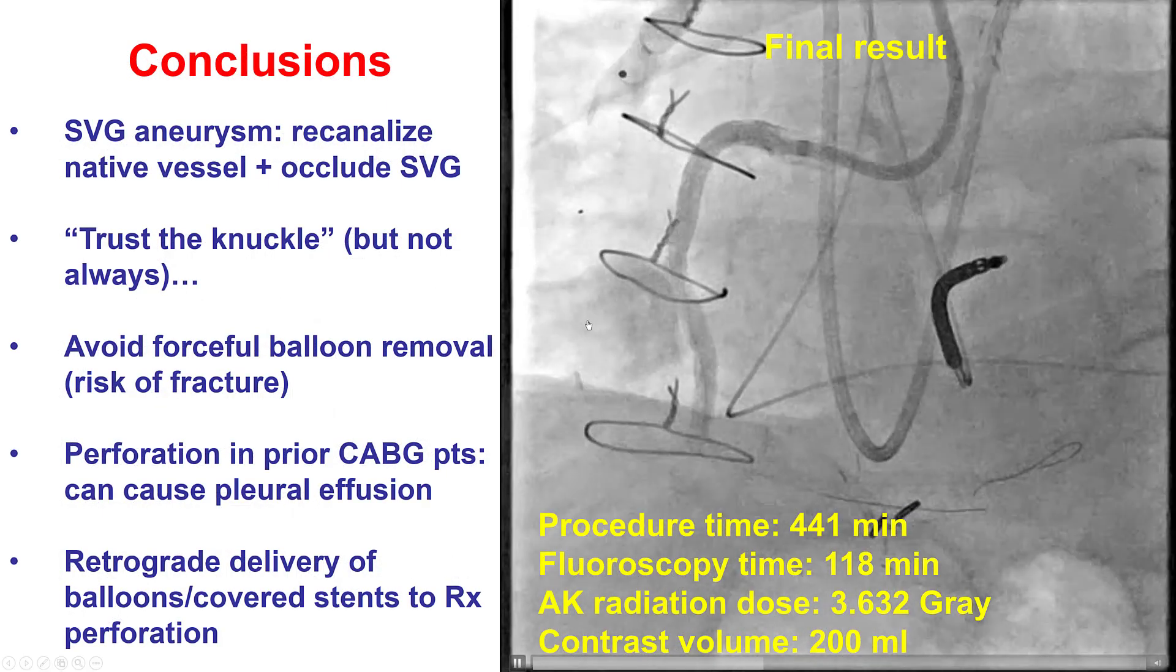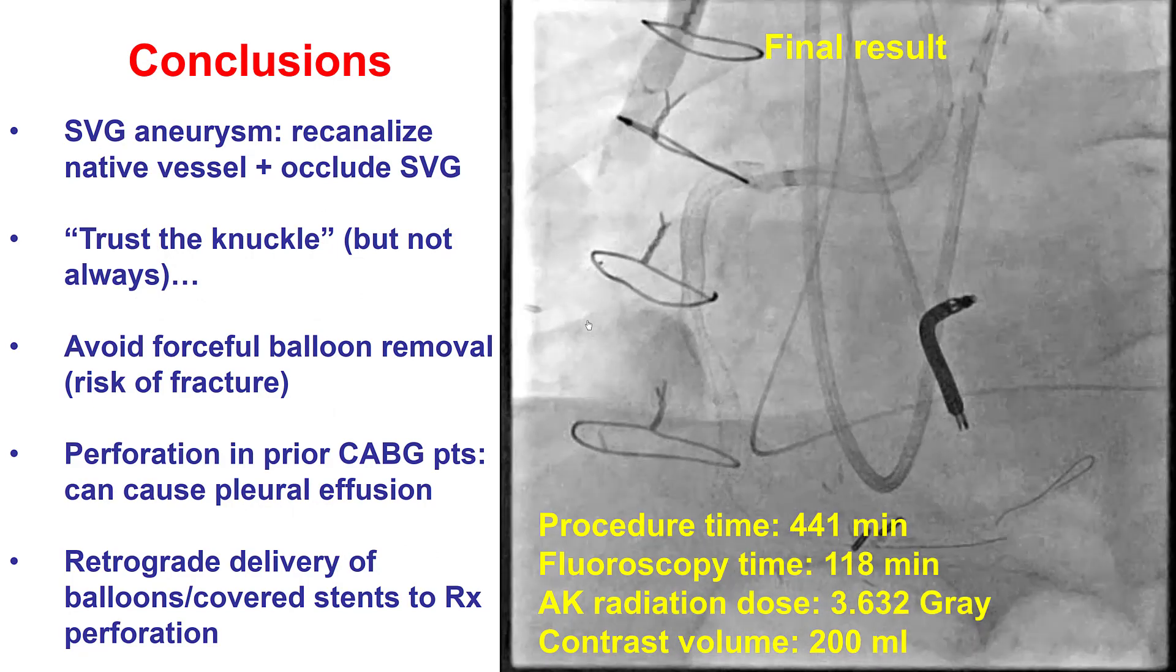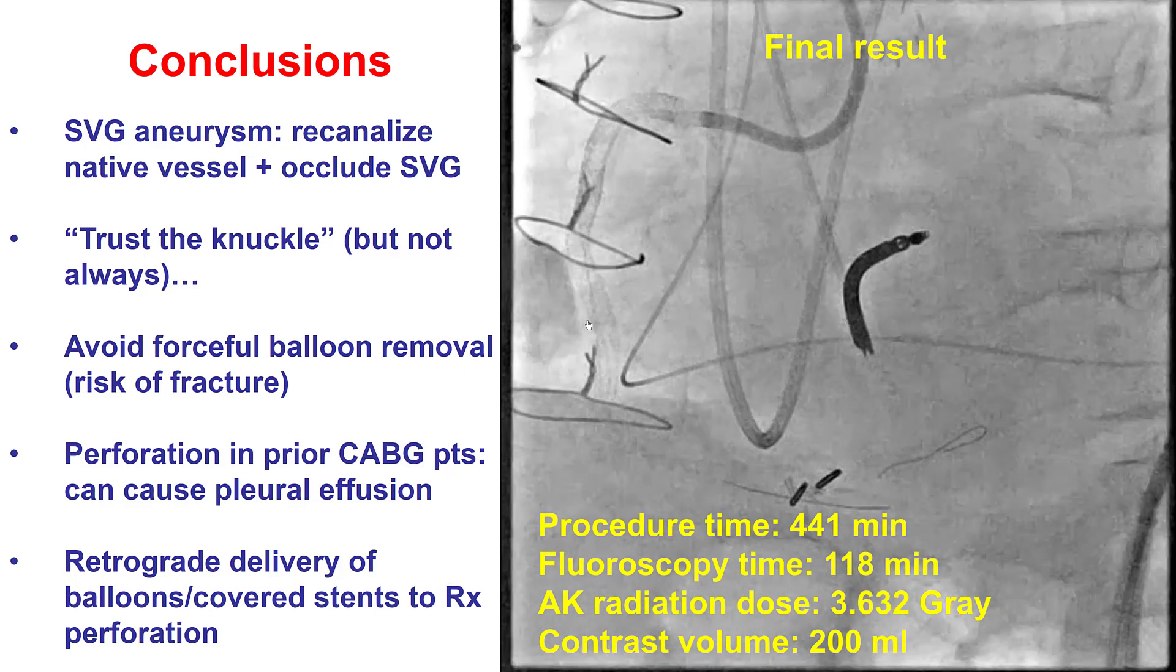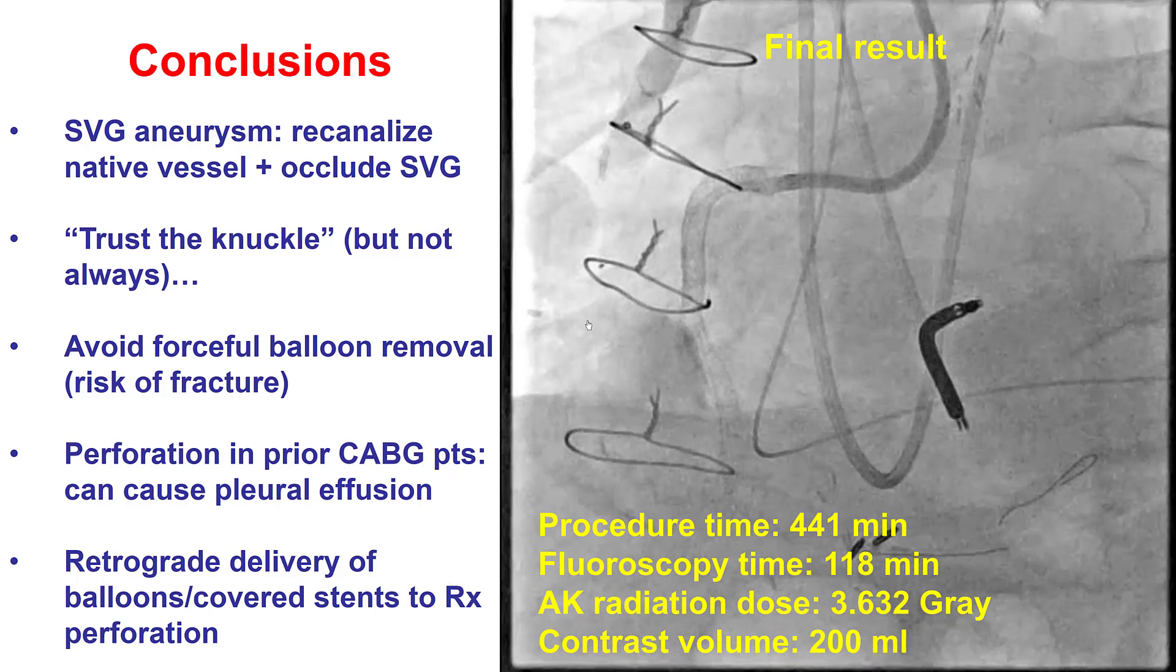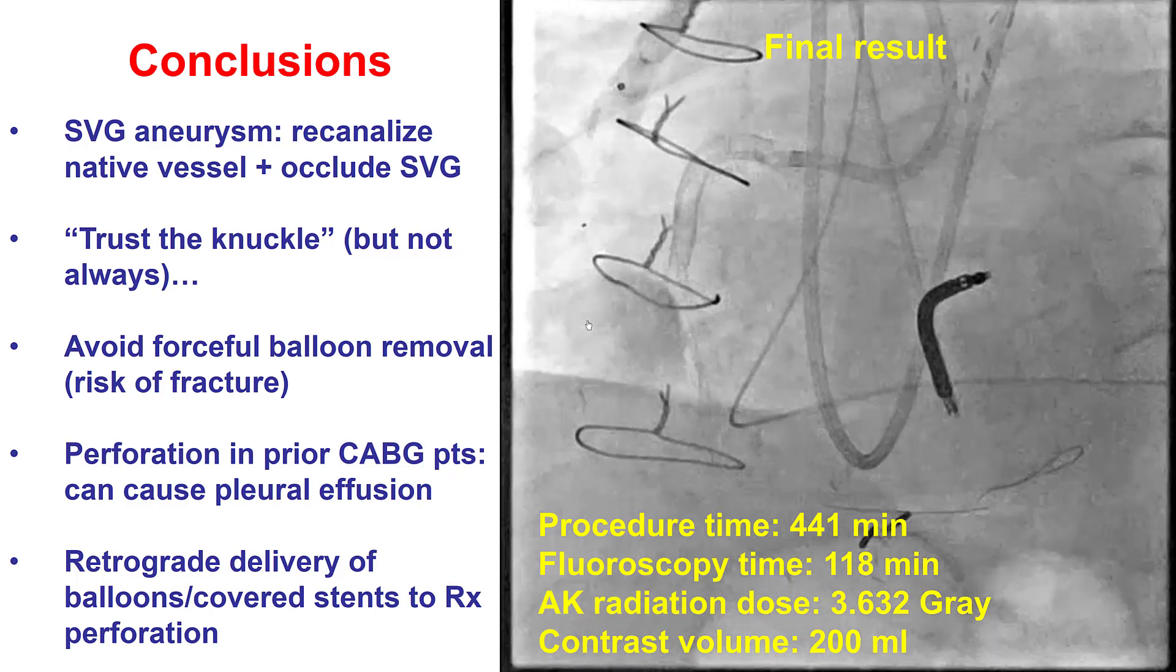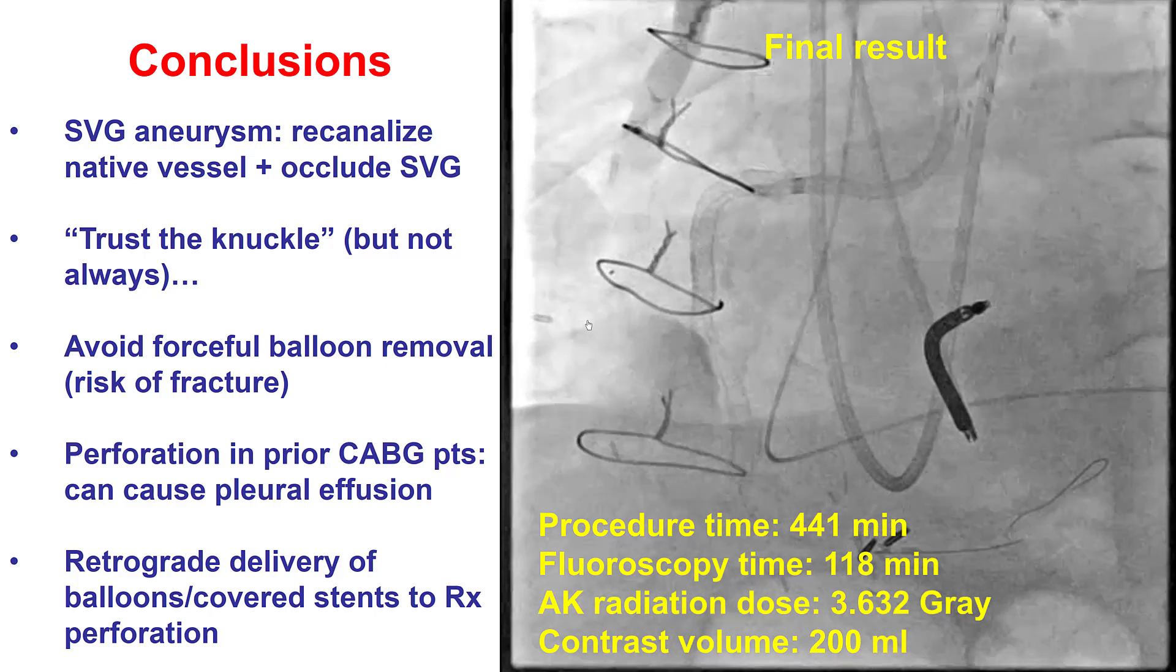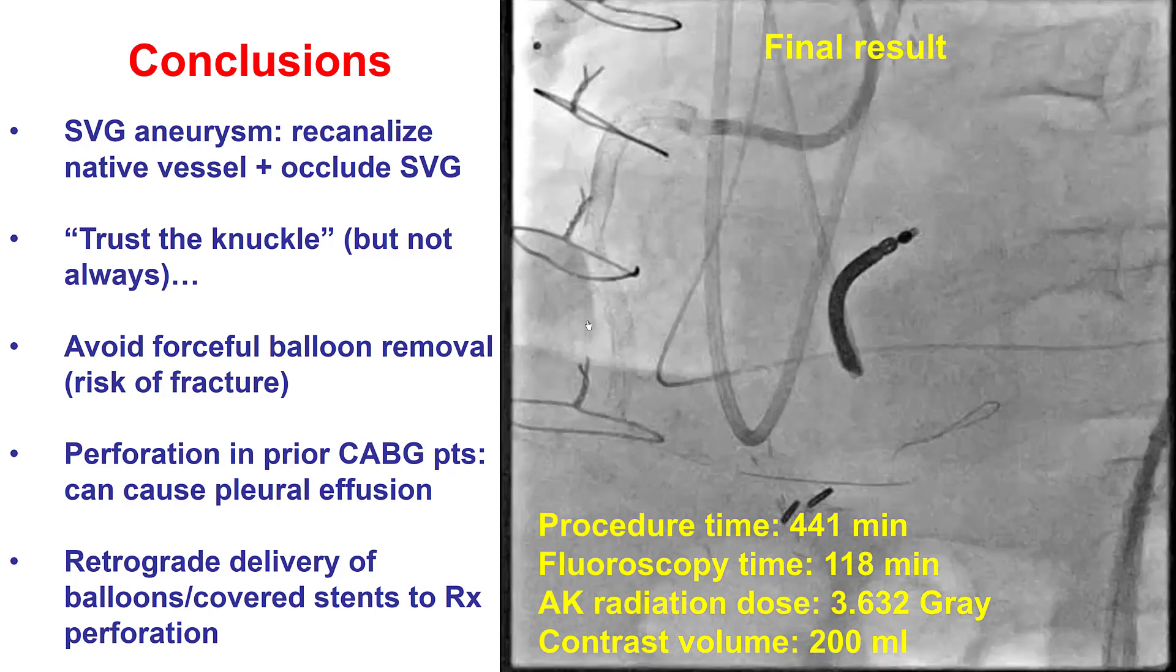So this case provides several important lessons for treating patients who have saphenous vein graft aneurysms. One of them is that one option for treating the aneurysm is to recanalize the native coronary artery and then occlude the aneurysmal vein graft. But as shown in this case, this is not always a simple task. There are many complexities, including severe calcification, risk of complications such as perforations that happened in this particular case. So although this is an option, it should be undertaken with care because it does carry certain risks.